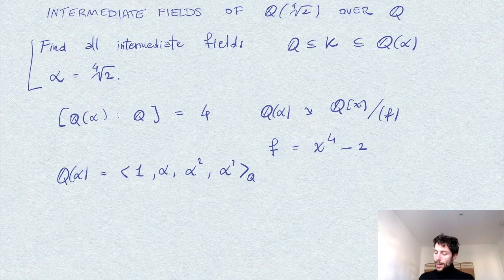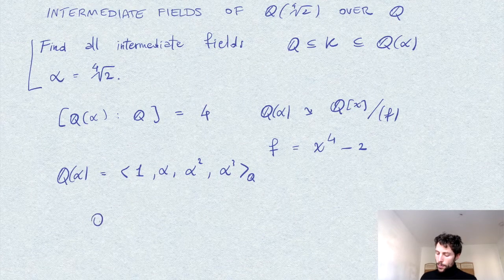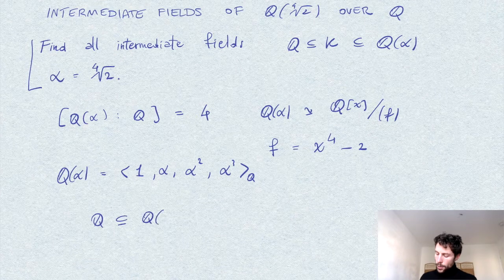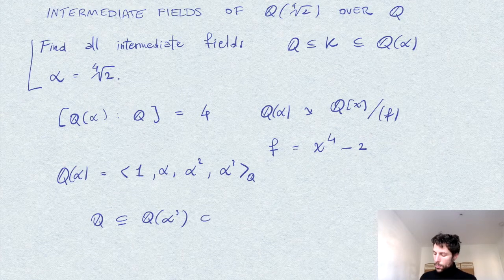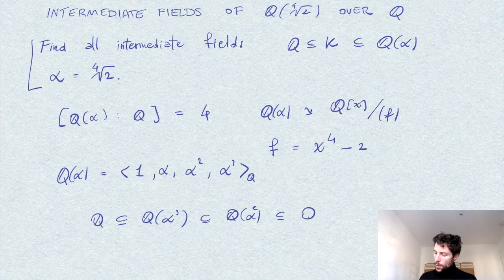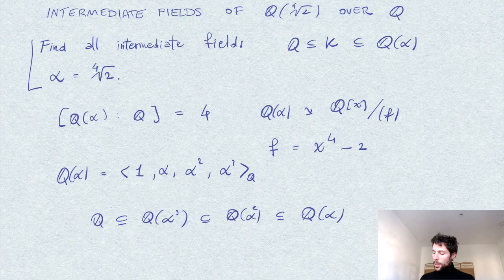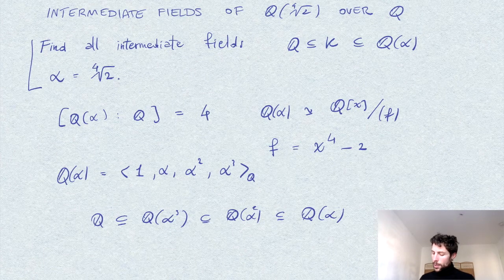We certainly have a tower of fields: Q ⊂ Q(α³) ⊂ Q(α²) ⊂ Q(α). At least we know there will be these intermediate fields. Let's see if some of them are trivial, meaning they equal Q or Q(α).